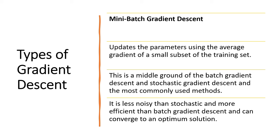And the final one will be mini-batch gradient descent. This one updates the parameters using the average gradient of a small subset of the training set. So this is a middle ground of the batch gradient descent and the stochastic gradient descent. And the most commonly used method. It is less noisy and more efficient than batch gradient descent and can converge to an optimum solution.